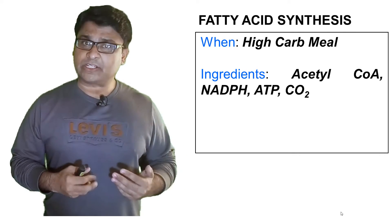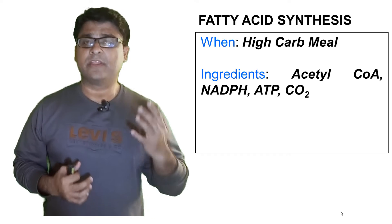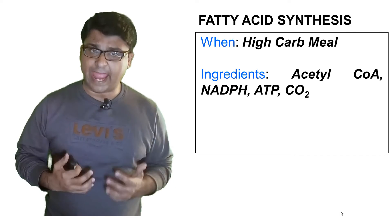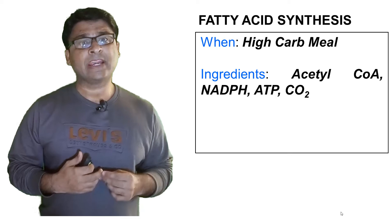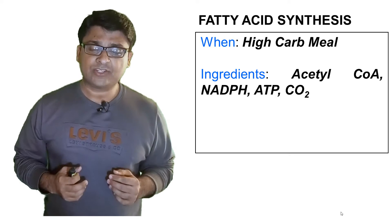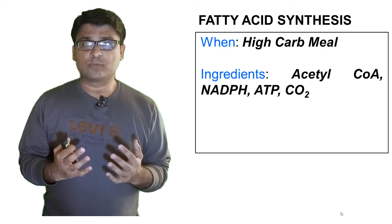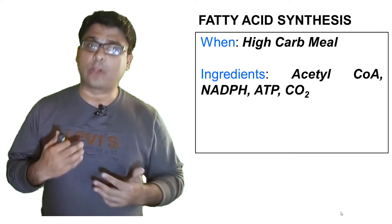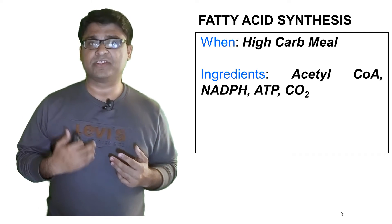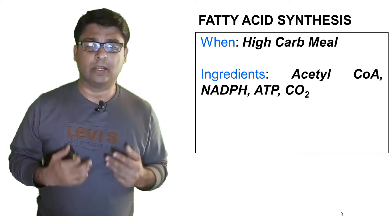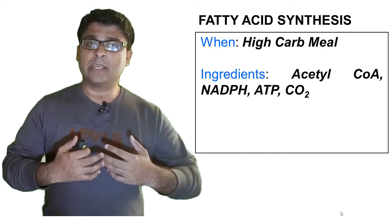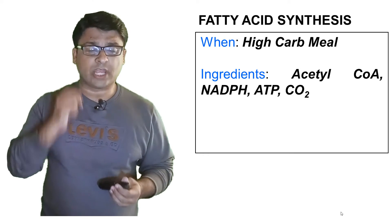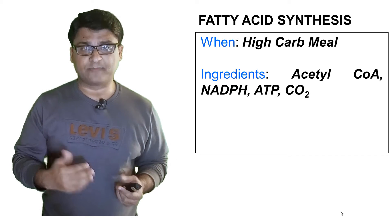Now, what are the ingredients required for fatty acid synthesis? There are four things to remember: the first is Acetyl-CoA, the second is NADPH, and then ATP and carbon dioxide. NADPH is produced by the HMP shunt. Acetyl-CoA is produced as a result of glycolysis and pyruvate synthesis which later enters into the Krebs cycle. ATP and carbon dioxide are also produced as a result of glycolysis and the Krebs cycle.